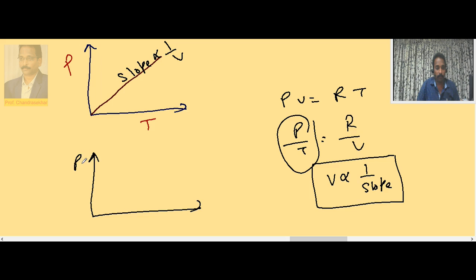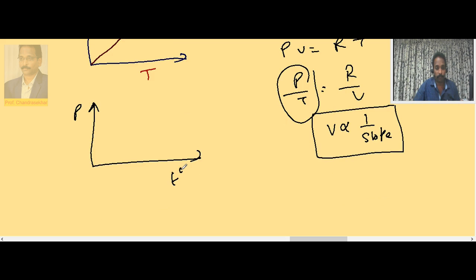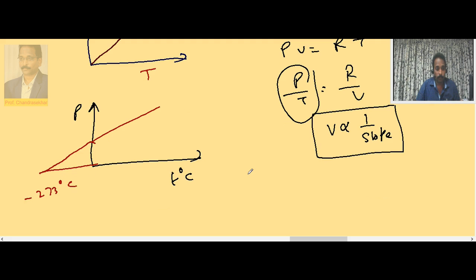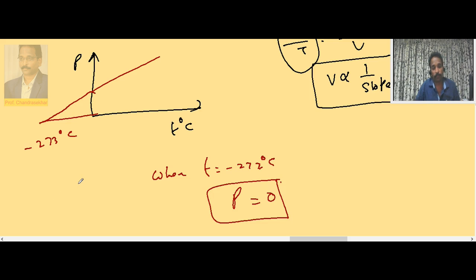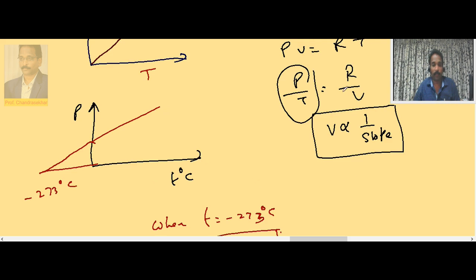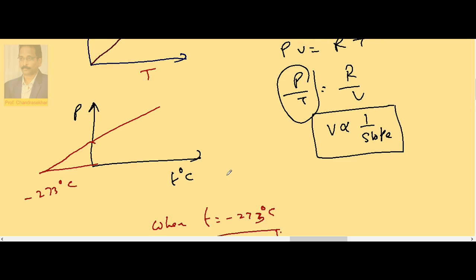Volume less means slope more; volume more means slope less. If the same graph is plotted with degrees centigrade, similarly the line intersects at minus 273 degrees centigrade. So when T equals minus 273 degrees centigrade, pressure is zero. At minus 273 degrees centigrade both pressure and volume are equal to zero. This is valid for an ideal gas.